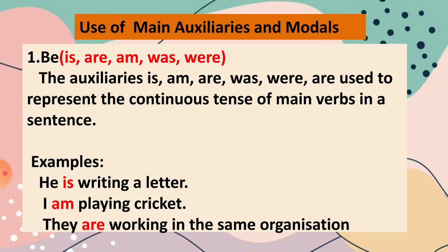Now in this chapter we are going to see the use of main auxiliaries and modals. The first is the to-be forms — that is, is, are, am, was, were. Let us see their use in a sentence. These are used to represent the continuous tense of main verbs.